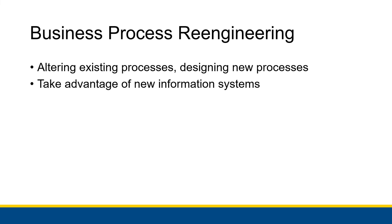You take an existing process and alter it to use a new information system, or you design a new business process from scratch in order to take advantage of a new information system. Integrating a whole bunch of databases into one big database to get rid of information silos might be one example of business process re-engineering — making the new information system by integrating all those databases and then restructuring all the processes that used the old databases.